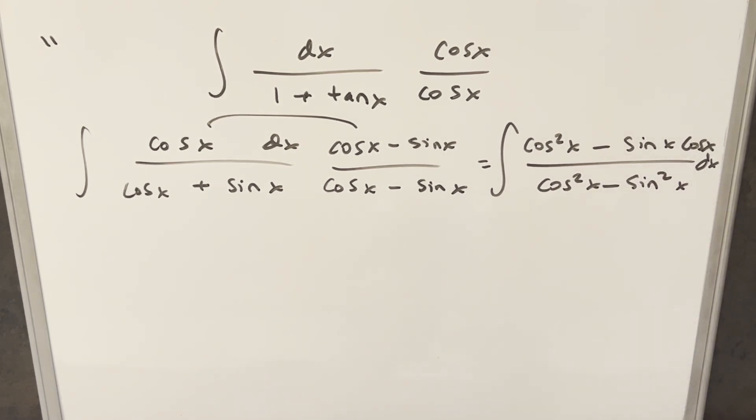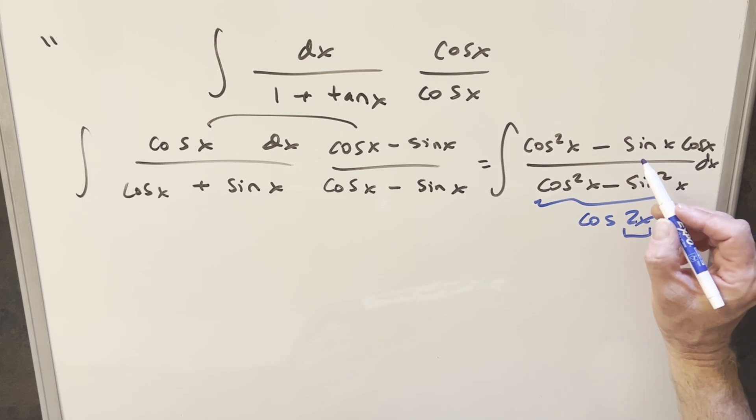Now the nice thing about this is we can use a bunch of trig identities because here, this one's the same thing as cosine 2x. And if I'm going to convert the angle on one, we probably want everything to have the same angle, so let's do it here as well.